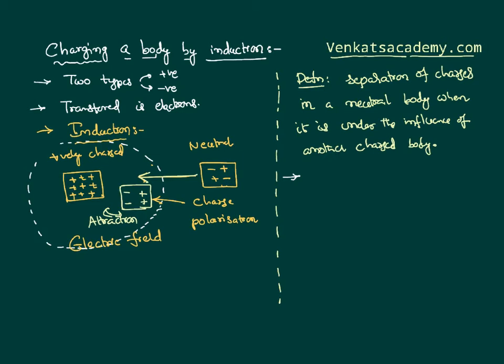Once induction starts happening, charge separation happens. Once charge separation happens between the two bodies, there is a force of attraction. That is why we say: induction precedes attraction. What do we mean by it? First, polarization happens in the neutral body — that is called induction. Then, as opposite charges are near each other, the body starts attracting. So attraction cannot happen until polarization happens first. Therefore, induction precedes attraction.